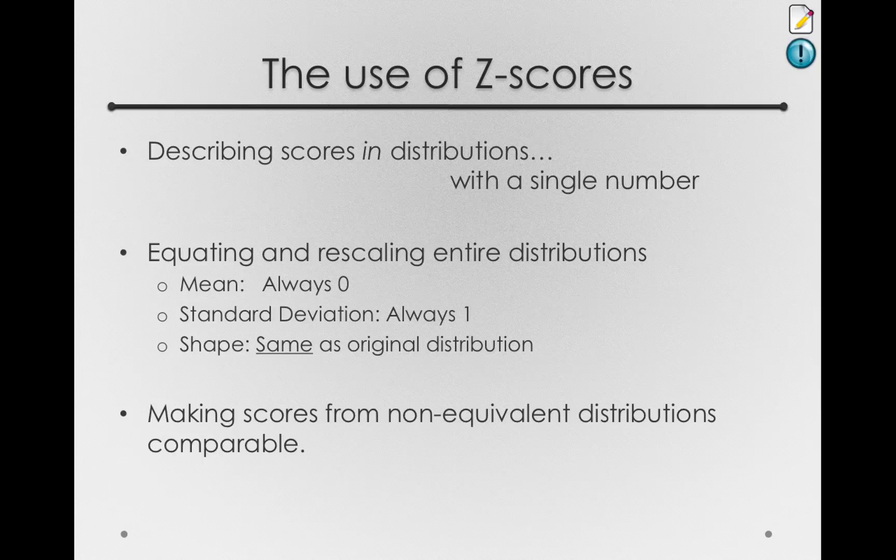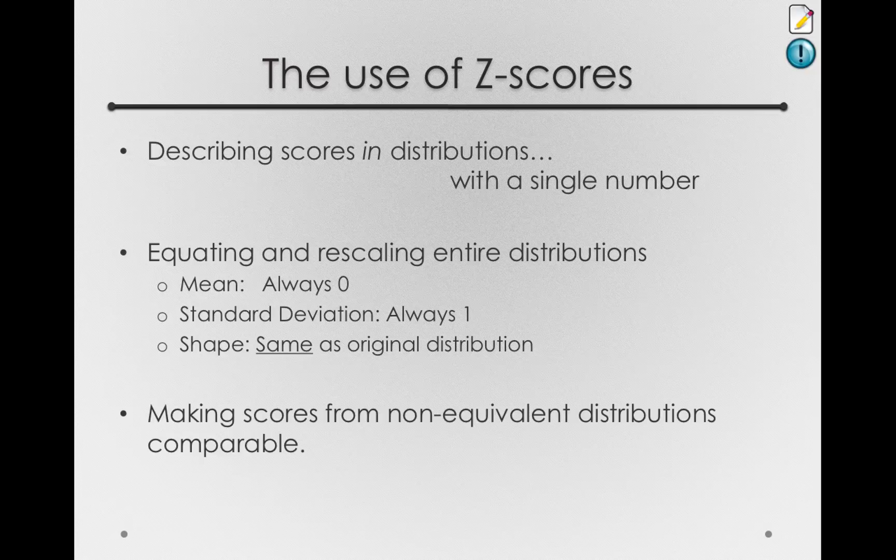So, even though the distributions of height and weight are on entirely different scales, once we've standardized scores, once we've z-scored values, we now have units that we can use in either distribution.